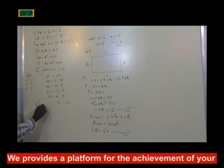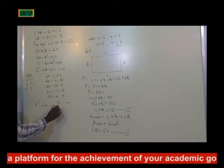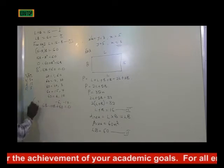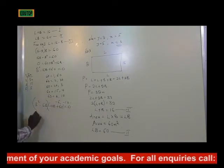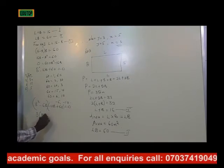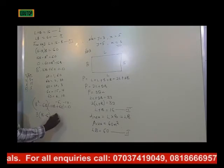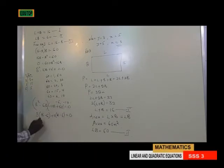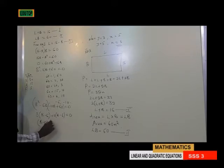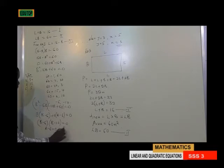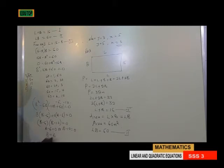So we have b squared minus 6b minus 10b plus 60 equals to 0. Factorizing: b(b minus 6) minus 10(b minus 6) equals 0. So b minus 6 equals to 0 or b minus 10 equals to 0. From b minus 6 equals 0, b equals 6. From b minus 10 equals 0, b equals 10.